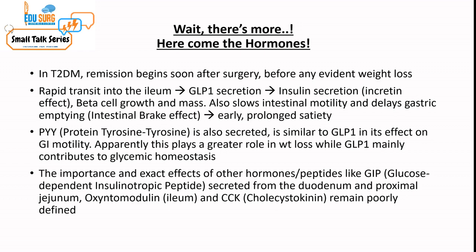The importance and exact effects of other hormones or peptides — like GIP, the glucose-dependent insulinotropic peptide secreted from the duodenum and proximal jejunum; oxyntomodulin, secreted from the ileum; and cholecystokinin — remain poorly defined.